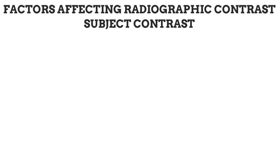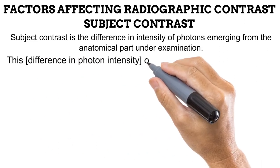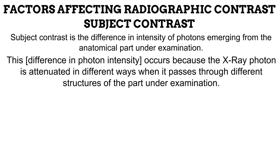That takes us to the factors that determine whether an image would have high or low radiographic contrast. The first factor is subject contrast. The radiographic contrast is the difference between densities on an image, while subject contrast is the difference between the density or thickness of structures within the anatomy being imaged. This difference in thickness determines how x-ray photons act when passing through different structures — photons easily pass through thin structures but are absorbed by thicker ones. More formally, subject contrast is the difference in intensity of photons emerging from the anatomical part under examination, because photons are attenuated in different ways when passing through different structures.